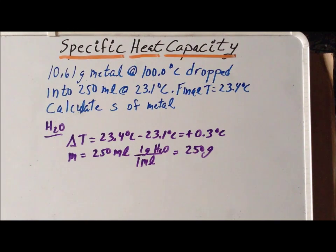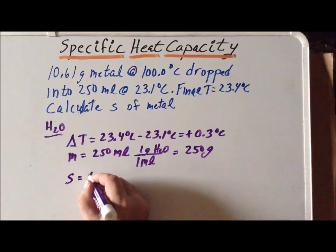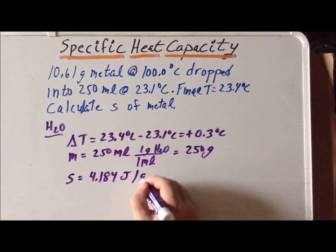And it will be a standard solution procedure to convert from the volume of the water to a mass using the density. Last but not least, the specific heat capacity of water is 4.184 joules per gram degree centigrade.